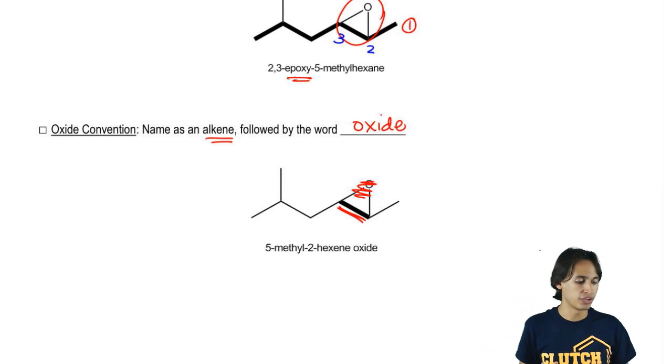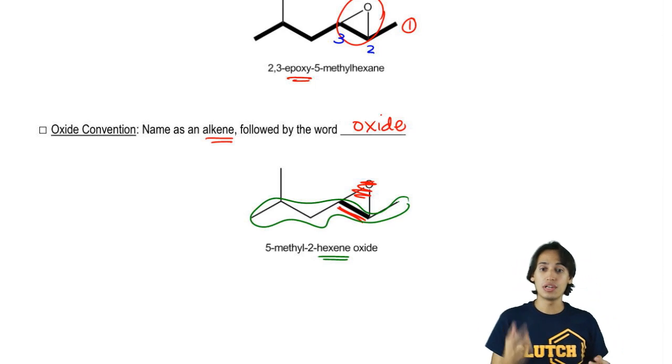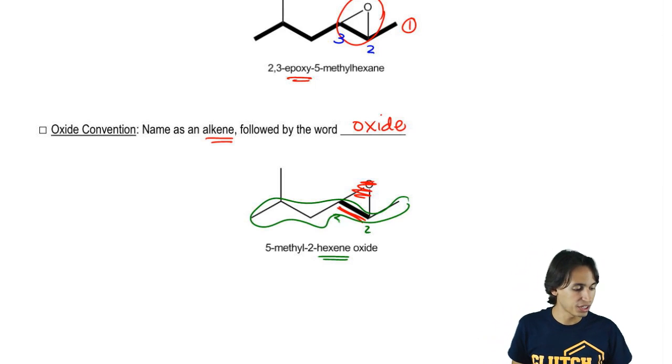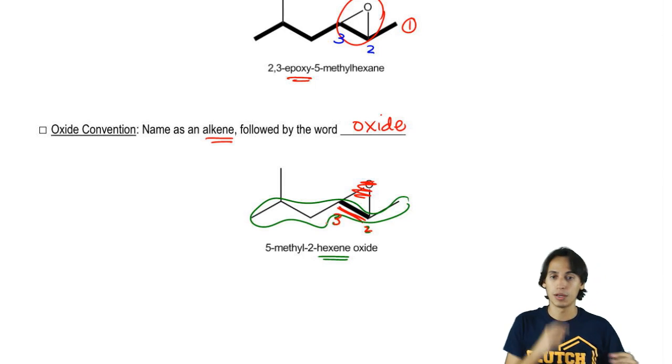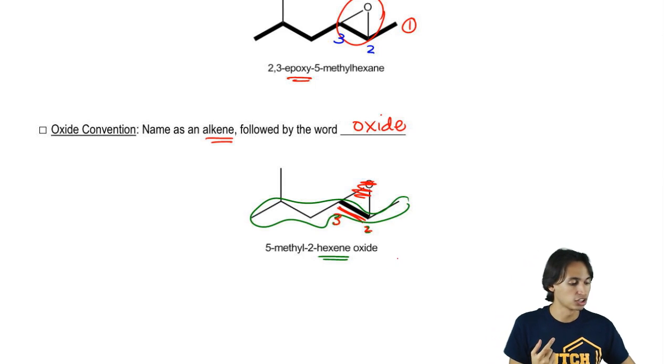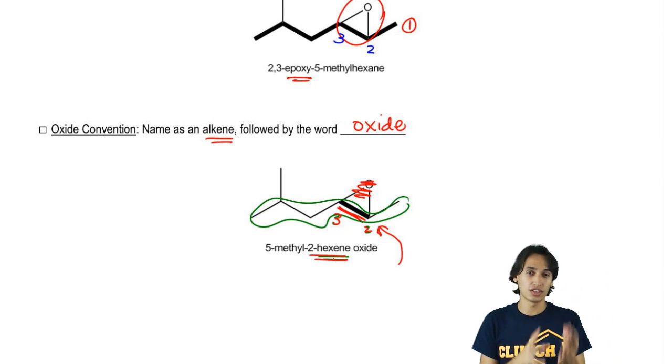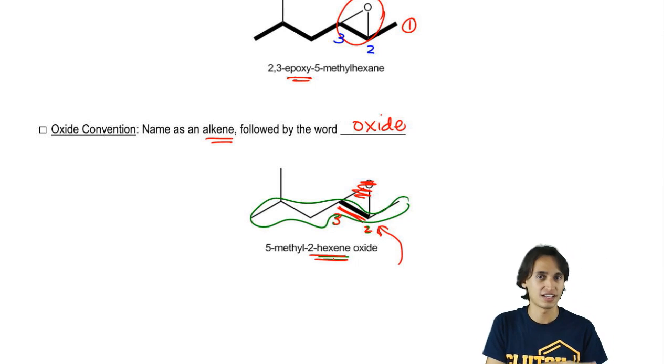So in this case, I would call this hexene because I've got a six-membered chain. Notice that my double bond would be across the two and the three, but the way that I named double bonds is different from the way that I named epoxides. I actually don't say that this is a 2,3-alkene. I would just start at the lowest number. So in this case, this is actually going to be what we call a 2-hexene. So don't get them confused. This would never be called a 2,3-hexene. You only do that for the epoxy substituent. So we know you have a 2-hexene.